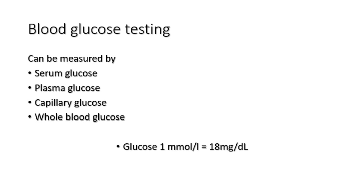Other investigations include blood glucose testing. Blood glucose can be measured as serum, plasma, capillary, or arterial glucose. Whole blood glucose is not commonly used. An important conversion: 80 milligrams per deciliter of glucose is equivalent to 1 millimole per liter. For example, 10 millimoles per liter of blood glucose is equivalent to 180 milligrams per deciliter.